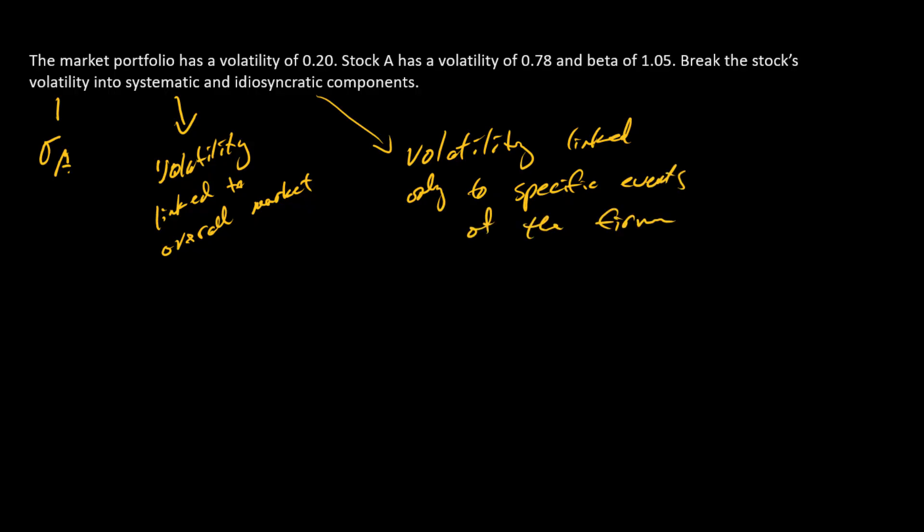And so to do this, we're going to use a CAPM framework where beta is a stock's sensitivity to the overall market, and so beta is the mechanical scaling up or scaling down of the market volatility into the stock. And so the formula that we're going to use is the following.